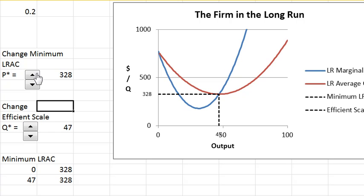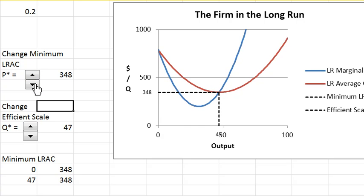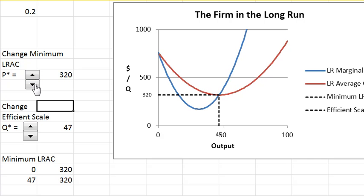It also allows you to push up the minimum of long run average cost where efficient scale is attained. So that should be able to raise this somewhat or lower it. And I'm going to hold it down just to lower it a bit. So you have those two controls here.